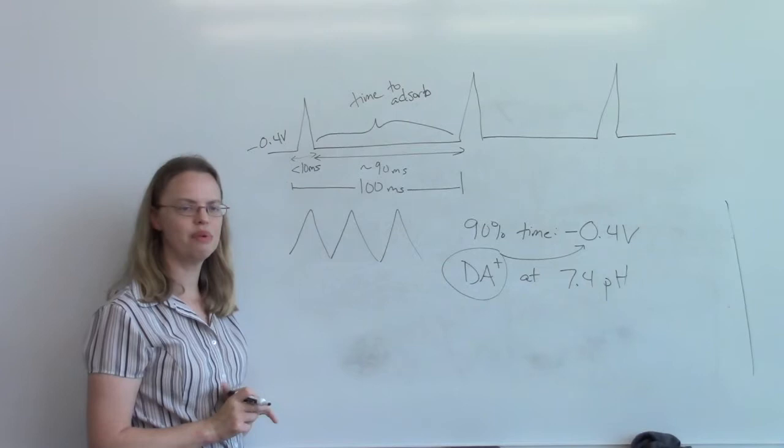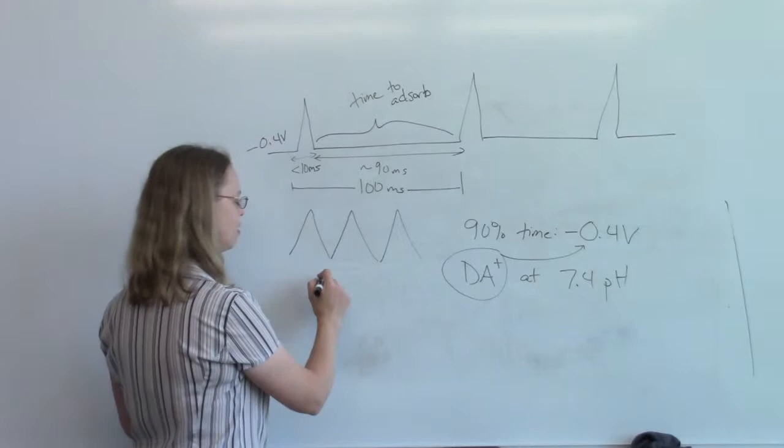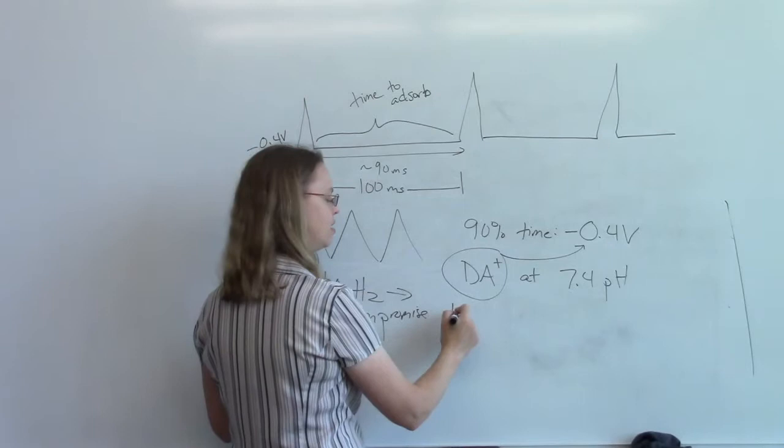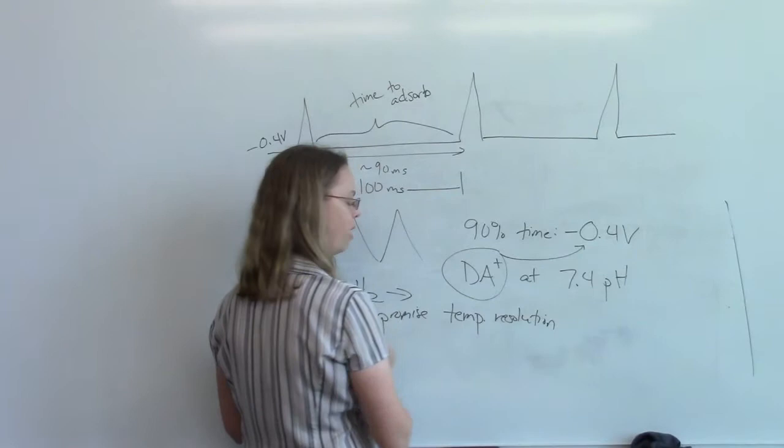And so it's a really funky technique in the respect that we can't quite go as fast as we like. And so the idea is we typically go at 10 hertz, and it's simply a compromise. It's not, there's no perfect thing. It's a compromise between temporal resolution and being able to go fast, because we want to see things quickly in the brain.